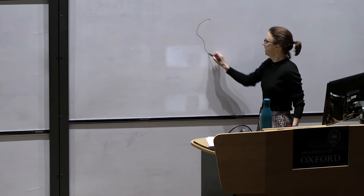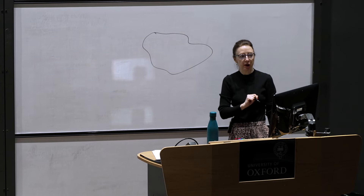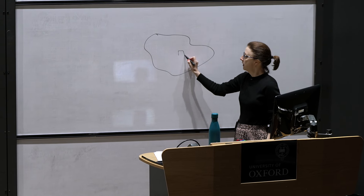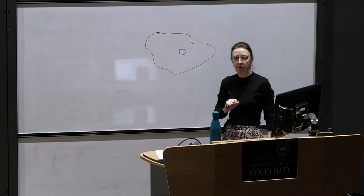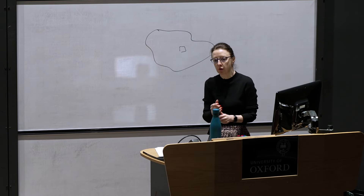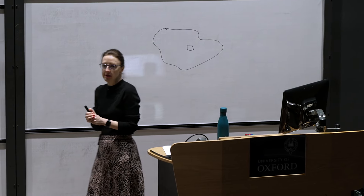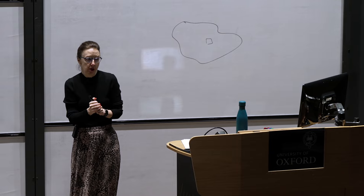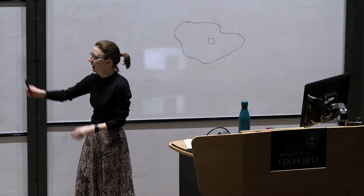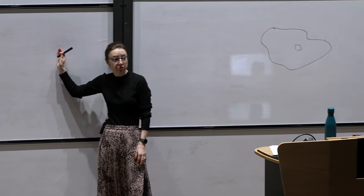When we were thinking about integrating over areas in the plane, we considered small area elements, we shrunk the area elements to zero, summed them all up, and in the limit, we got a double integral. And what we're going to do today is think about how these ideas extend to volume integrals.